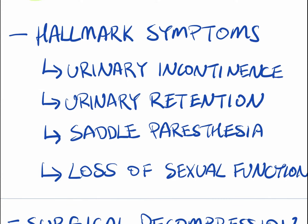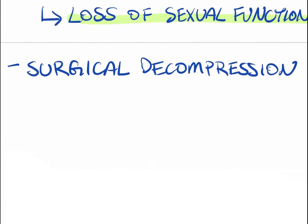The last hallmark symptom is loss of sexual function — you're unable to get aroused and the genitals don't work properly anymore. If cauda equina syndrome is left untreated, you could have permanent urinary incontinence, urinary retention, saddle paresthesia, and loss of sexual function. If it's not treated within 24 to 48 hours, it can lead to permanent issues with all four of these symptoms.